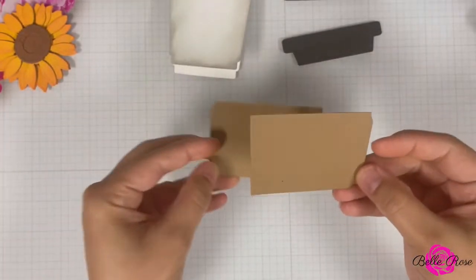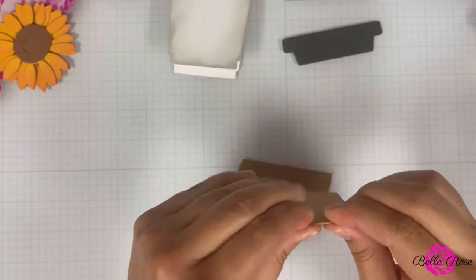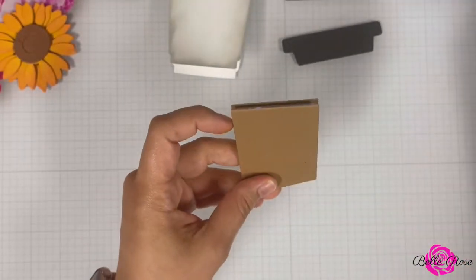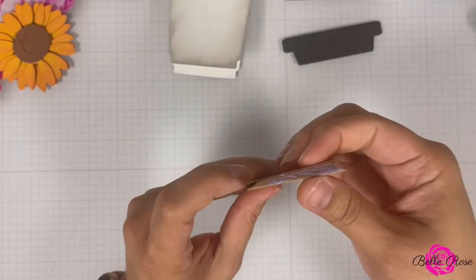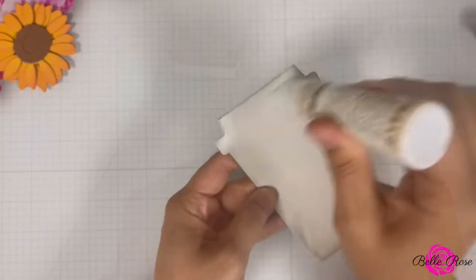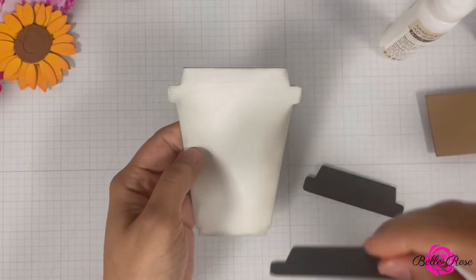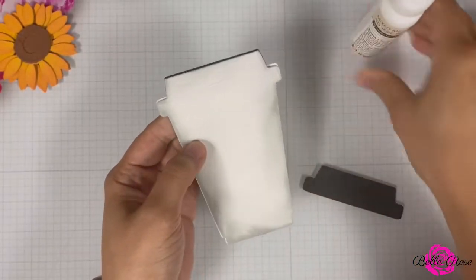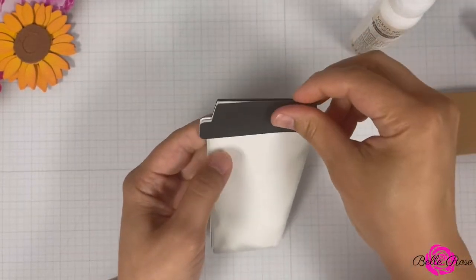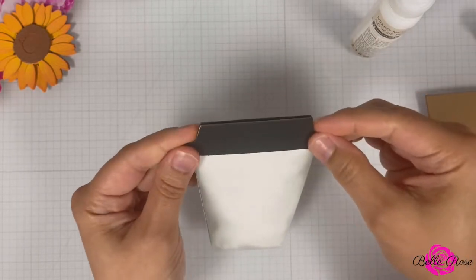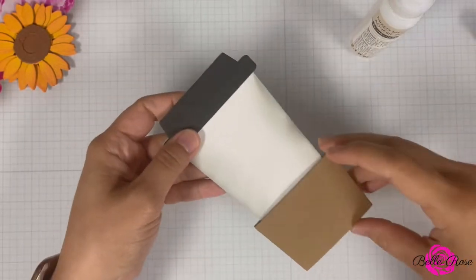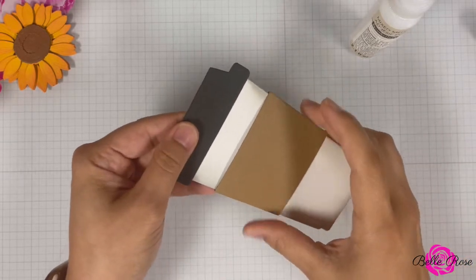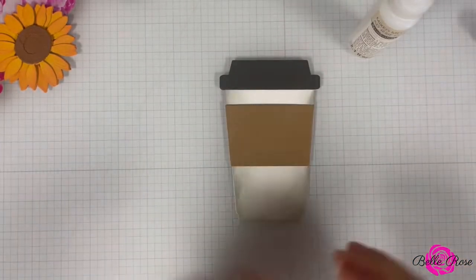Now it's time to assemble the coffee sleeve. I'm going to use adhesive glue to adhere the front and the back of the sleeve together. Once I'm done, I'm going to then adhere the front and back of the lid to the coffee cup card base. Wow, try saying that three times. Coffee cup card base, coffee cup card base, coffee cup card base. Now I'm going to add the sleeve to the coffee cup just to make sure that it is secured.